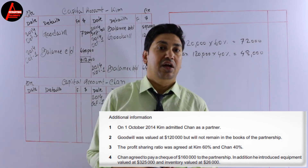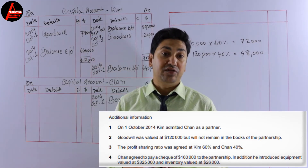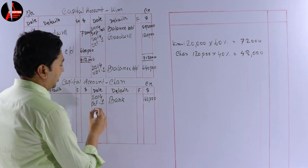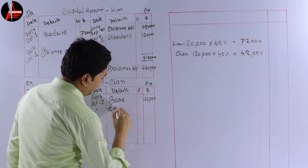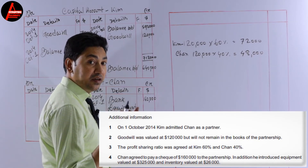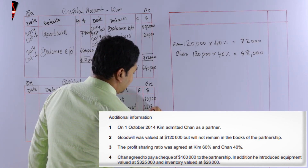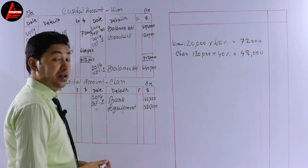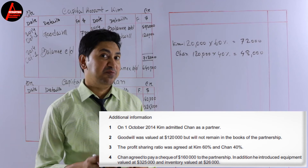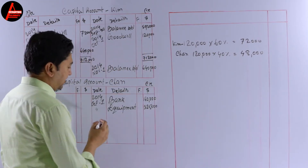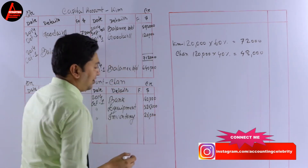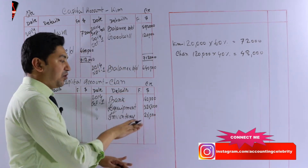In addition, Chen introduced equipment valued at 325,000 dollars, so he also brought equipment into the business. Write on the same date: Equipment — 325,000 dollars. He also brought inventory valued at 26,000 dollars, so write: Inventory — 26,000 dollars.